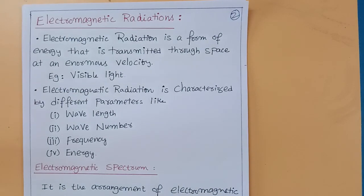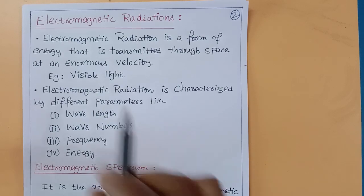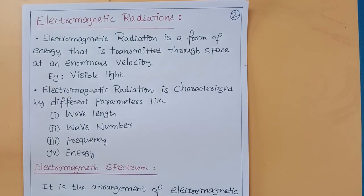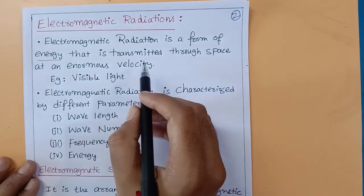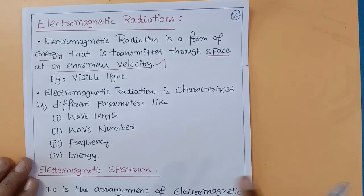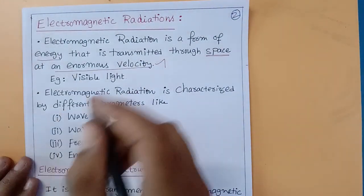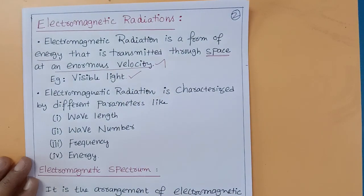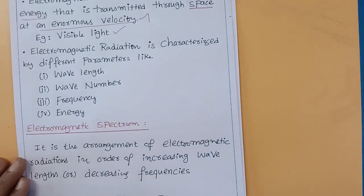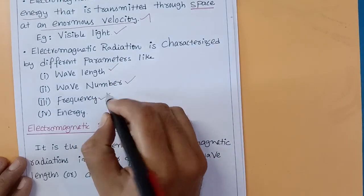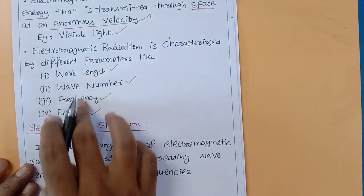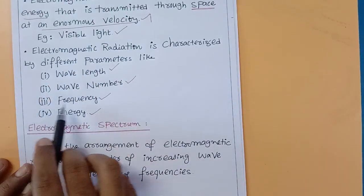Next, let's discuss electromagnetic radiation. Electromagnetic radiation is a form of energy that is transmitted through space at an enormous velocity — it travels at the speed of light. For example, in our solar system, the sun emits electromagnetic radiation. Electromagnetic radiation includes visible light — the white light we can see. It is characterized by different parameters: wavelength, wave number, frequency, and energy.